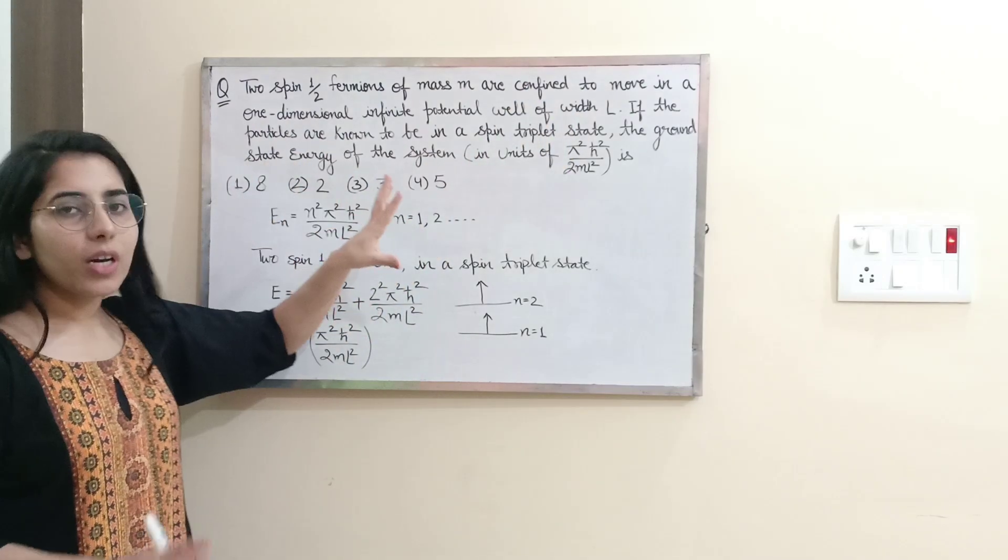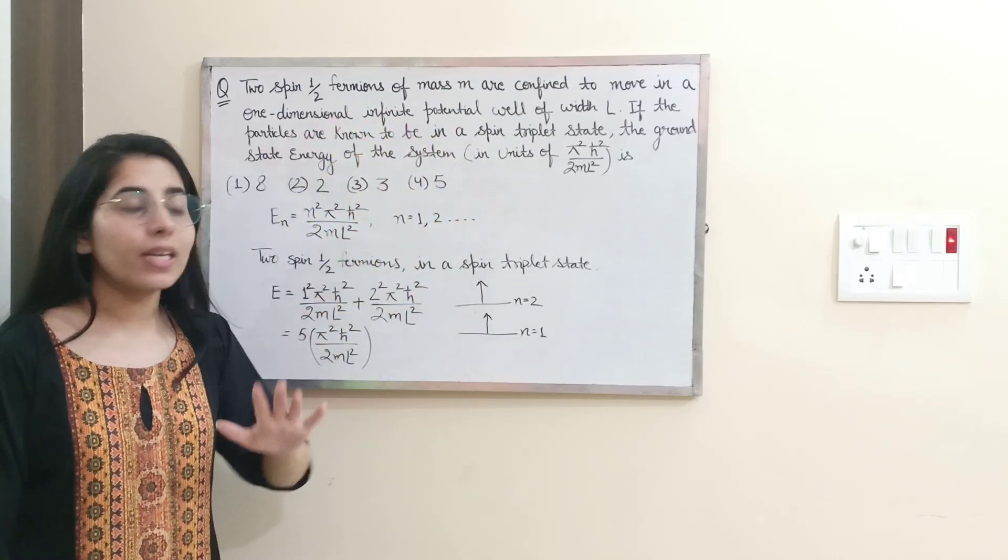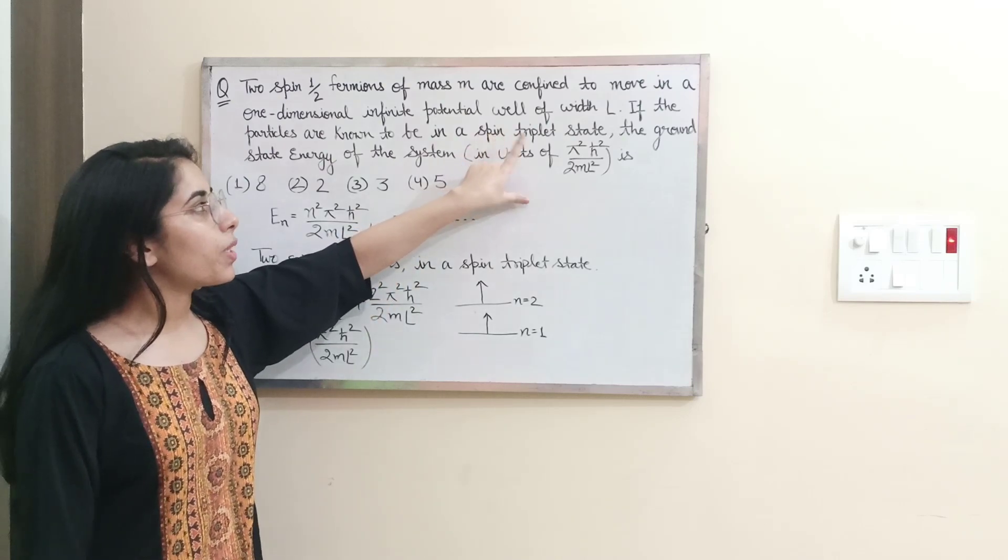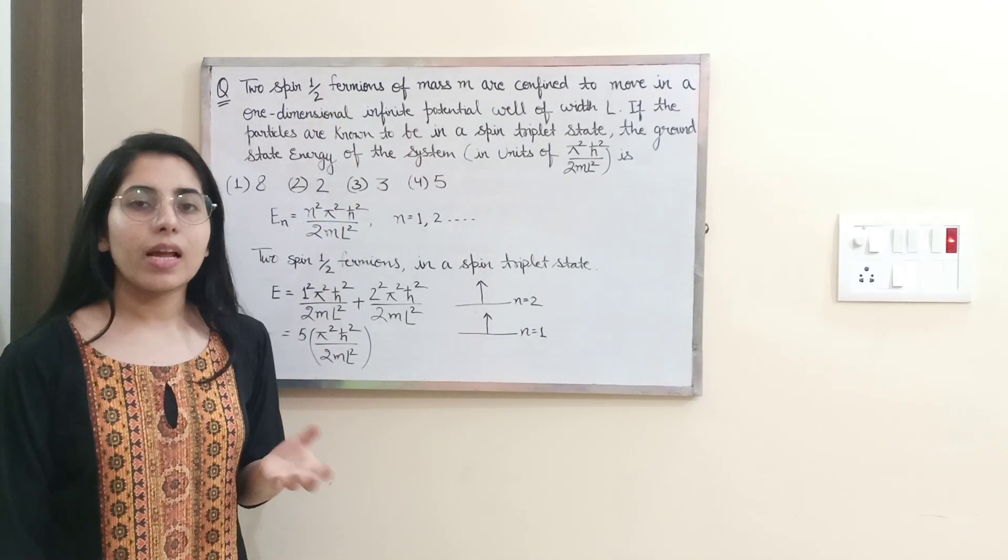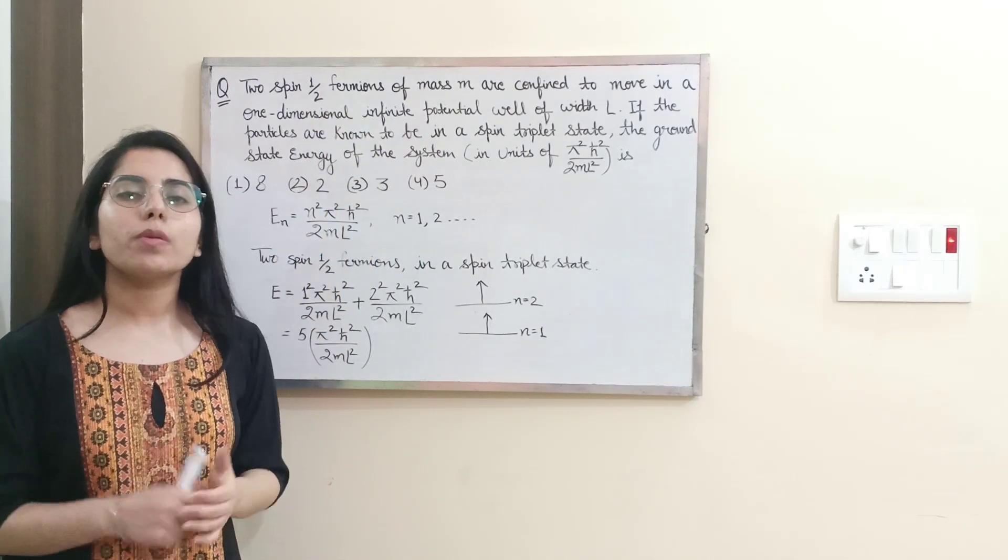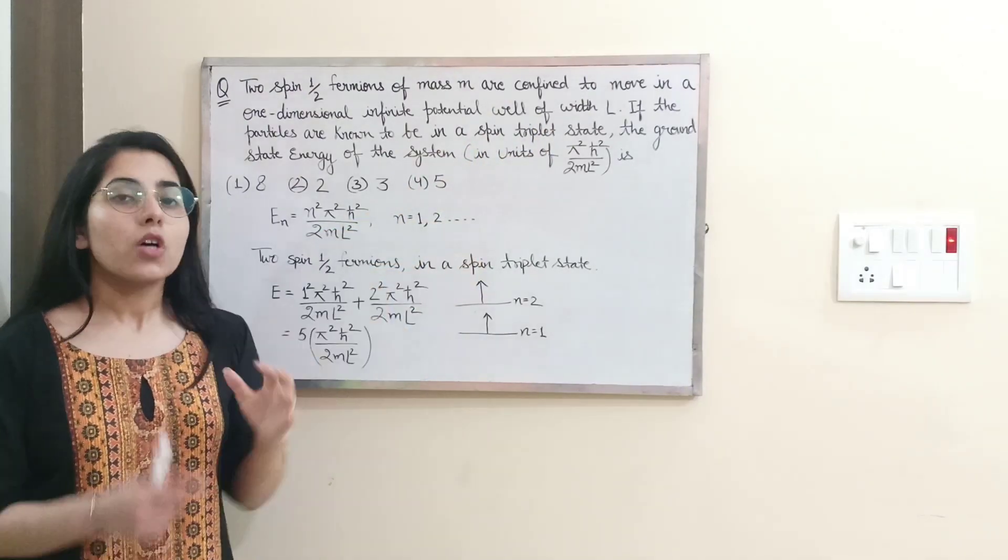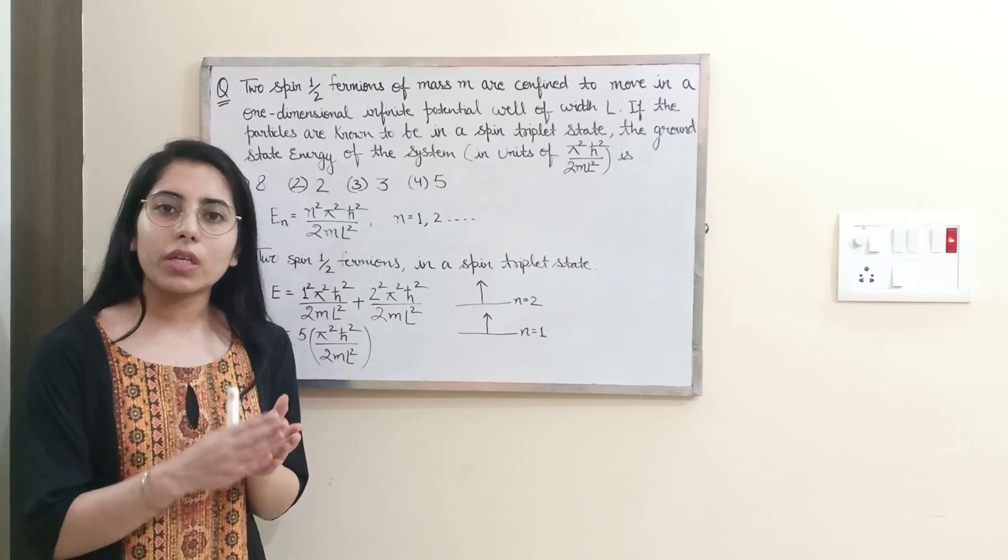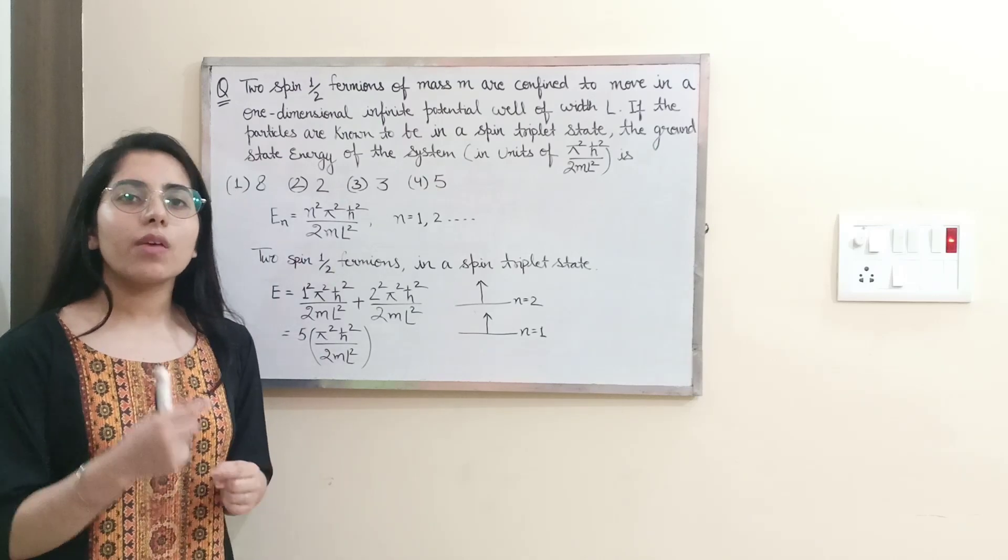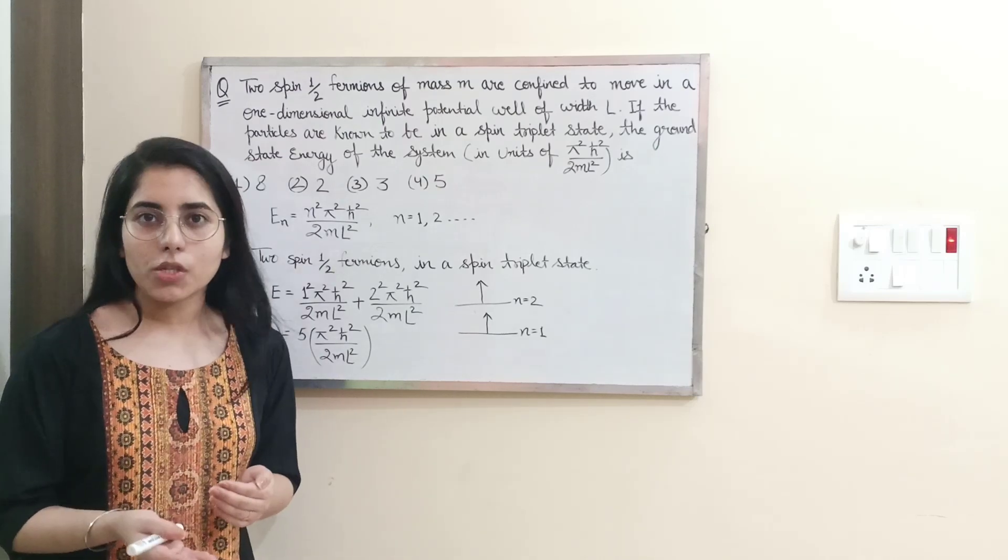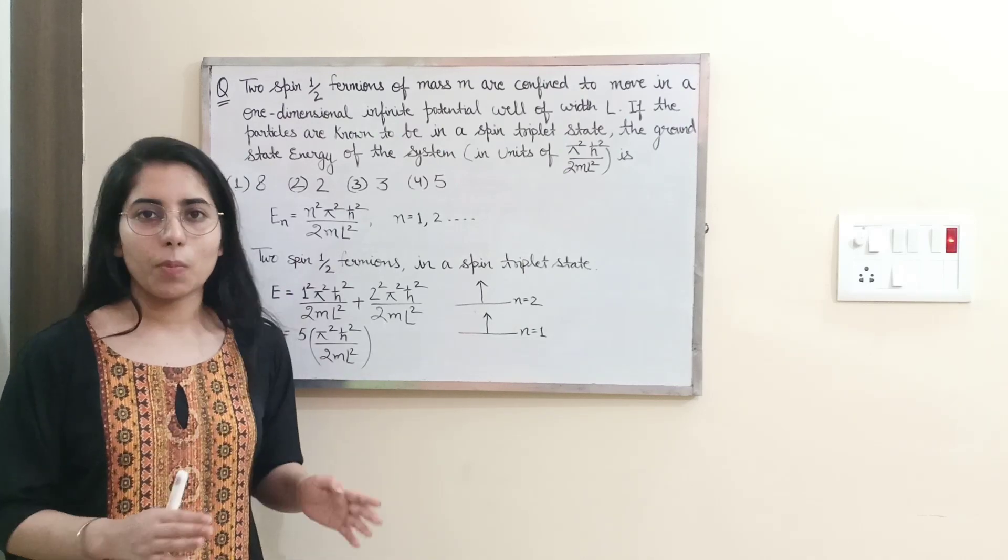The third point - if the particles are in a spin triplet state. If you have watched that previous video you will be familiar with this concept. We have to take the multiplicity, that means 2 into spin plus 1 equals 3 for the triplet state. And I have also discussed the exact configuration, how the particles will be present, what will be the spin of the particles.